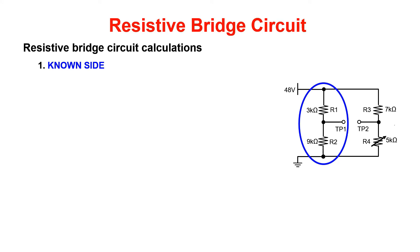First, calculate RT using R1 and R2. Then calculate IT by dividing the applied voltage by RT. Then multiply IT by R2. This gives us our known value at test point 1.